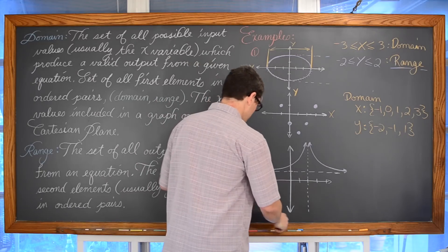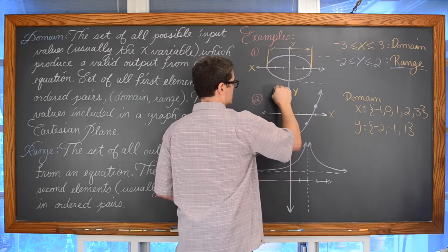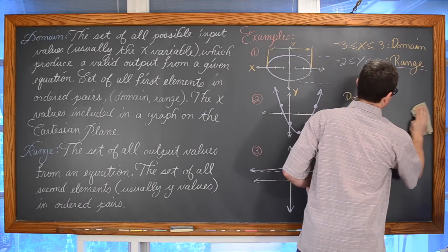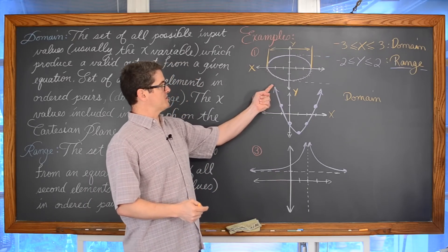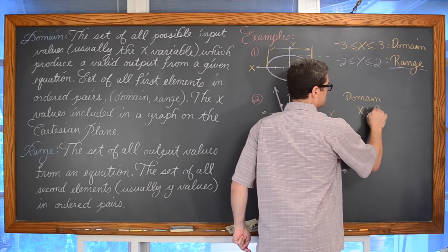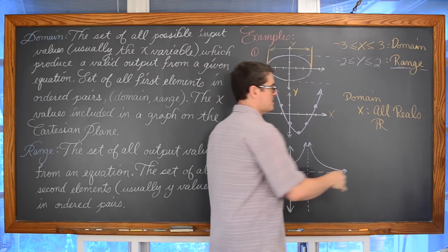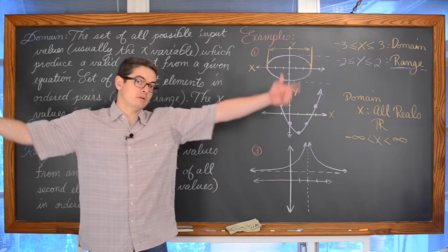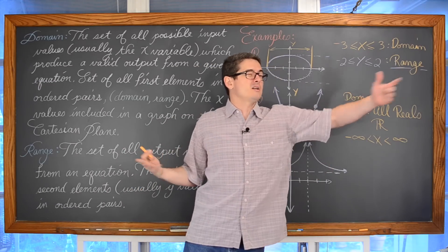Now if I change this example to one that is continuous and goes on forever — not just those five discrete points — my domain is going to be all real numbers. You can say x is all reals, or use a double R for all reals, or say that x is greater than negative infinity and less than positive infinity, because the graph goes on forever. You cannot say equal to infinity because infinity is not a concrete value — it goes on forever and ever.